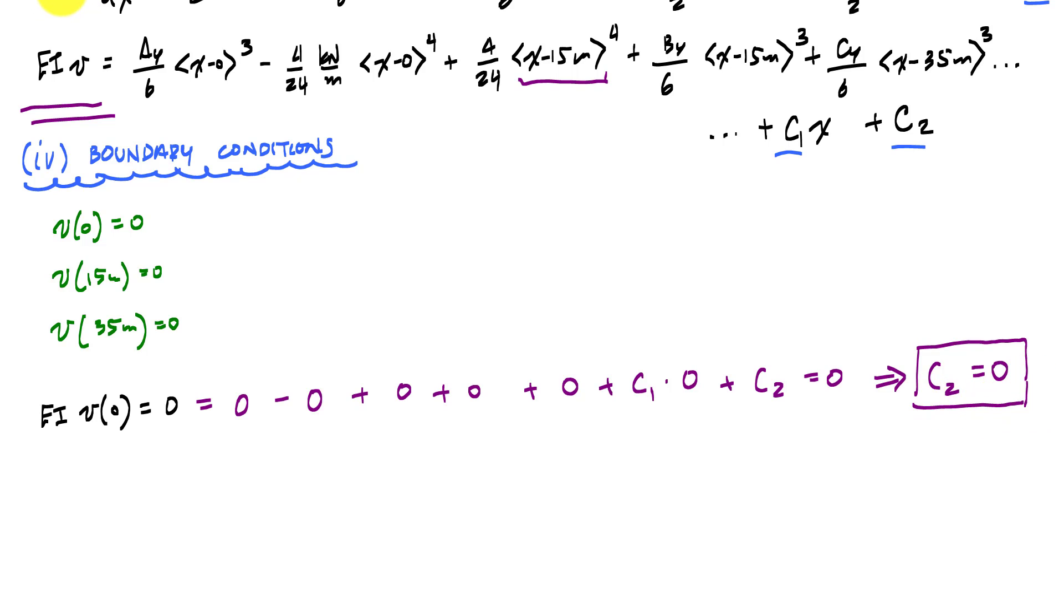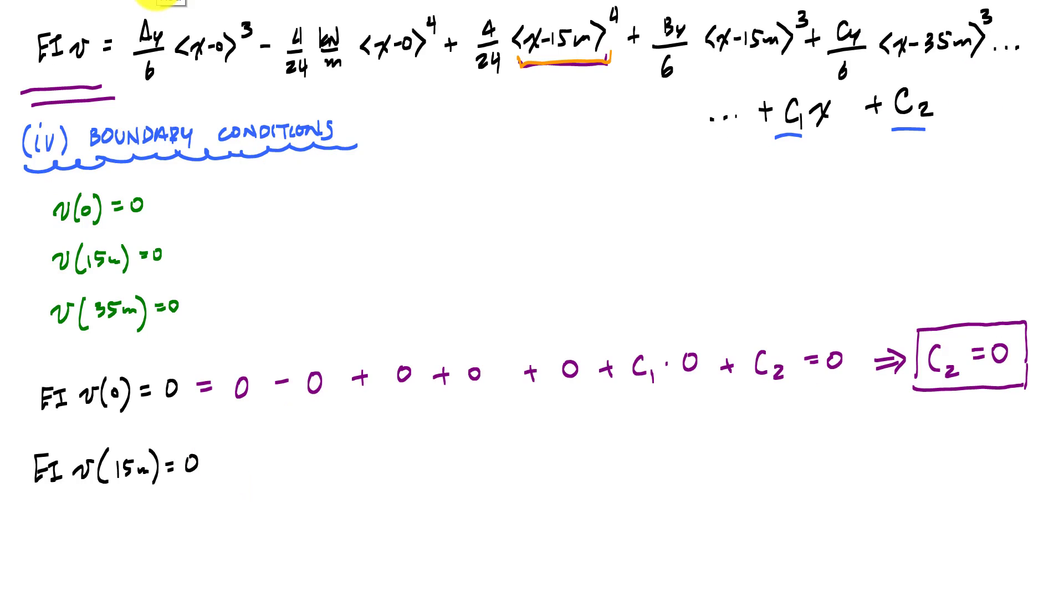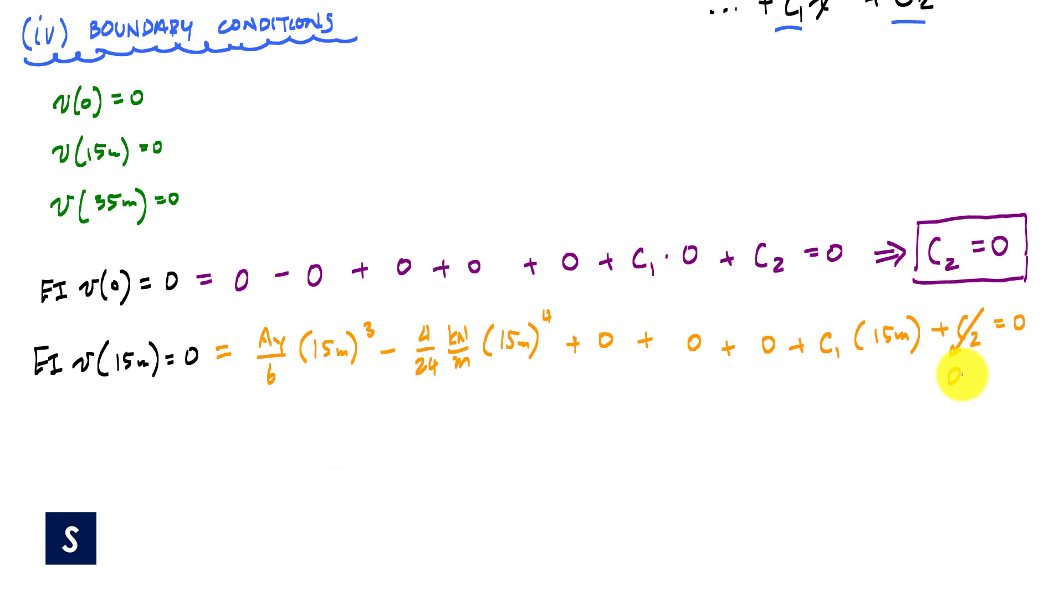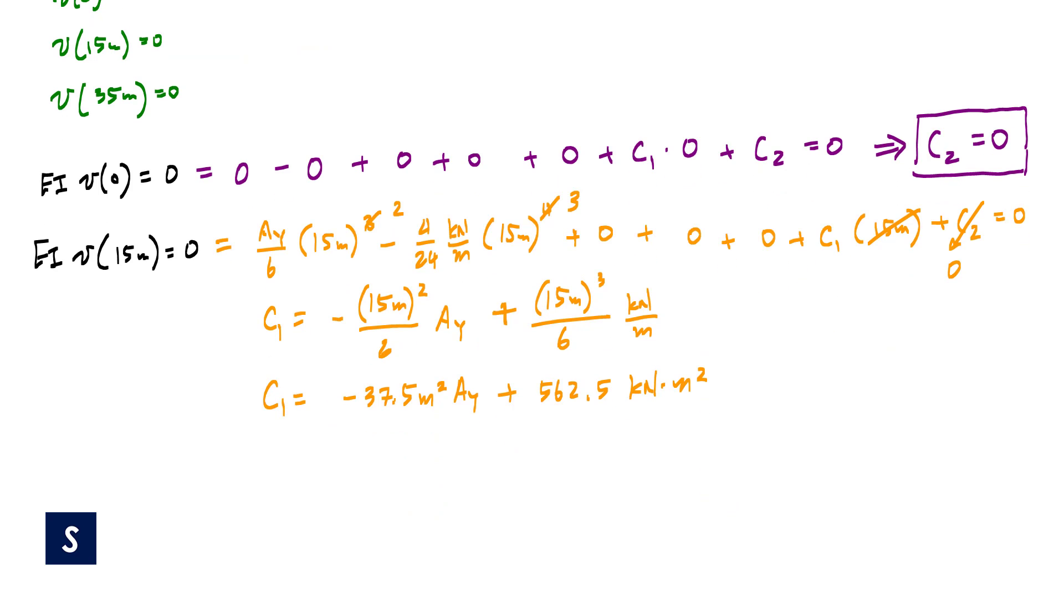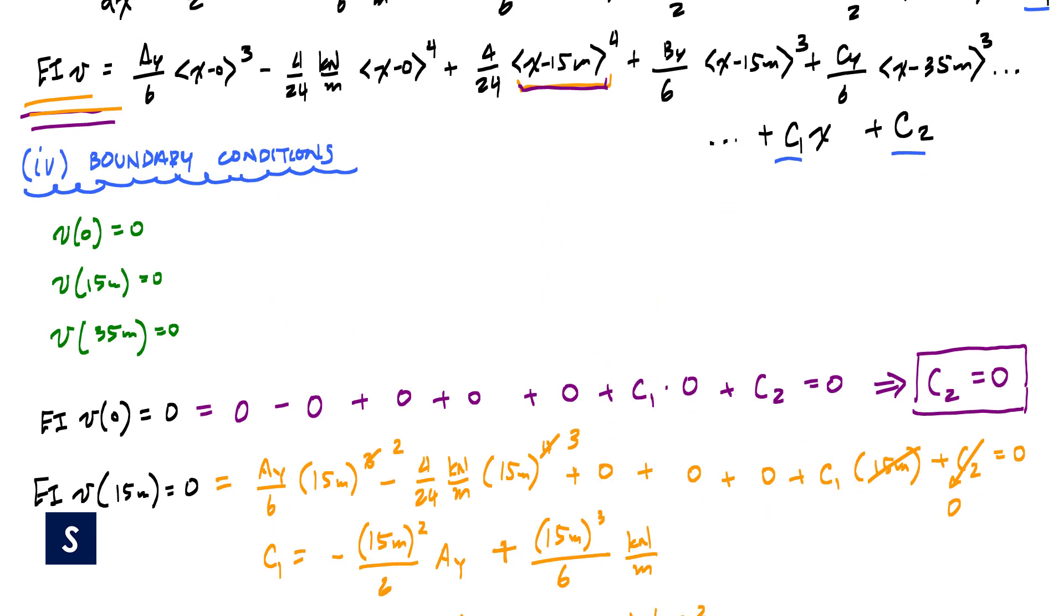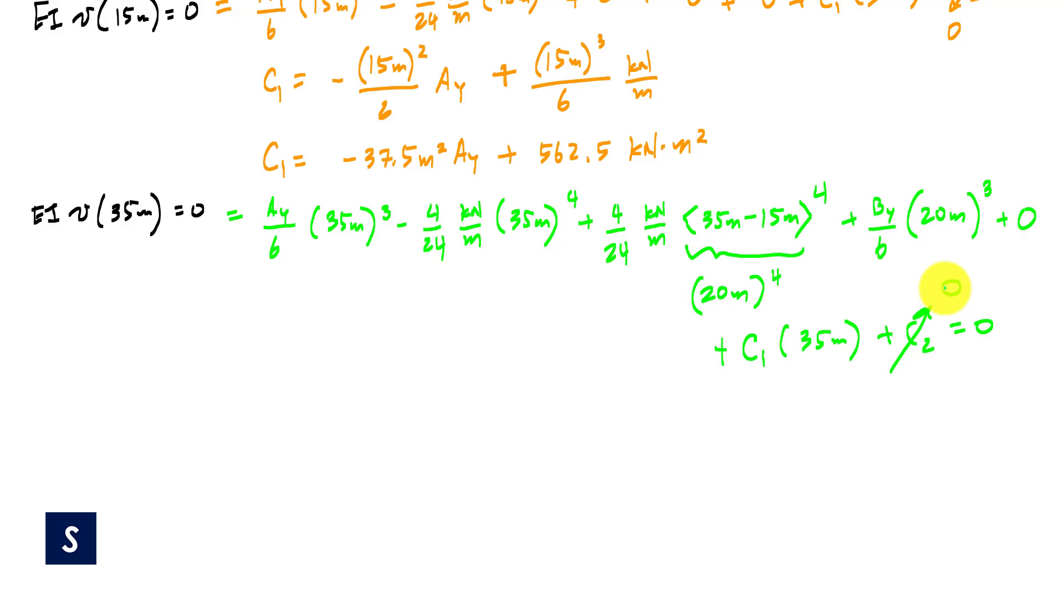Then I'm going to apply my next boundary condition here. I'll say EI times v at 15 meters should equal 0. And I'm plugging in 15 meters this time to this equation. And I'll write it in orange plus C1 times 15 meters plus C2 equals 0. I know that C2 is 0. I can solve for C1. So now I have an equation for C1 in terms of Ay.